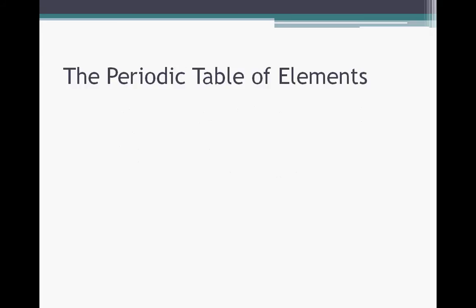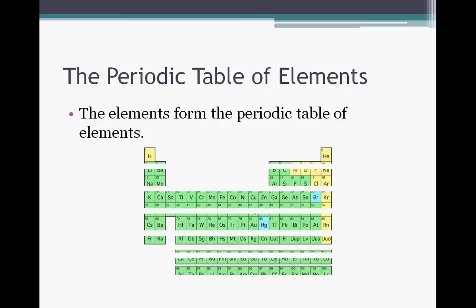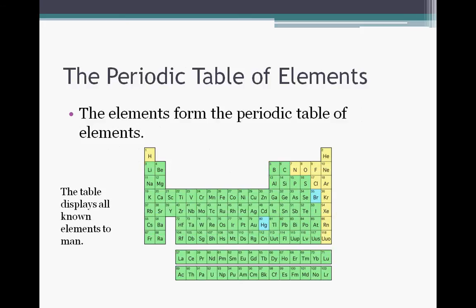The periodic table of elements. The elements form the periodic table of elements. It shows every single type of atom we know to date and organizes them in rows. As shown here, the table displays all known elements to man. They are arranged by groups, and each group has its own similar properties. There is going to be a lesson on the periodic table of elements, but that is for another day.